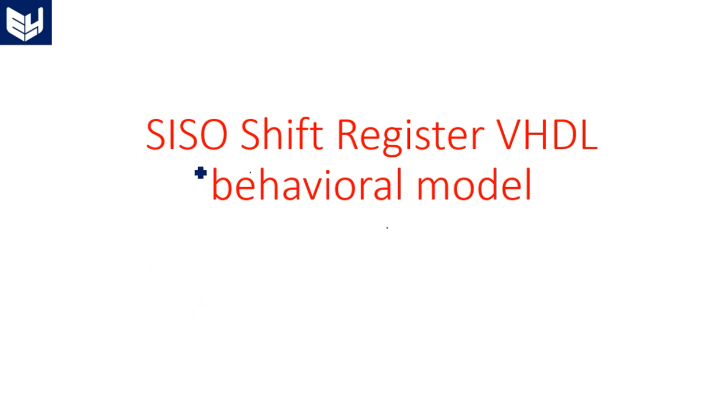In this video I am going to explain about serial-in serial-out shift register behavioral model VHDL coding. In the last few classes I started the shift registers concept and covered the four types: serial-in serial-out, serial-in parallel-out, parallel-in serial-out, and parallel-in parallel-out. Now we focus on the serial-in serial-out shift register.